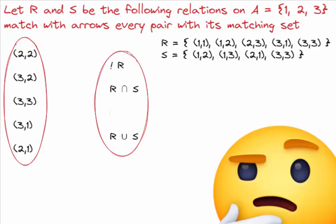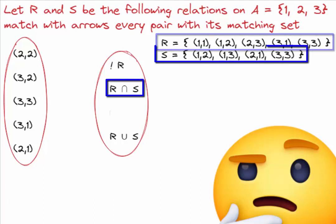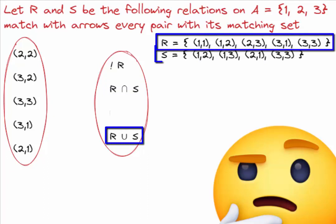Question 2. We have these 5 pairs that we must link by an arrow with each corresponding set. It can be the R complement, the intersection between R and S, or maybe the union between R and S.